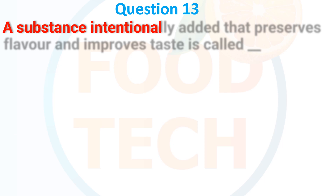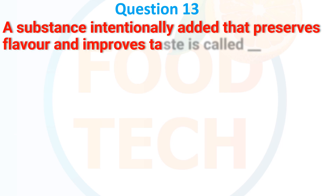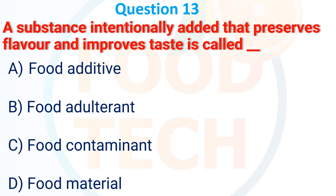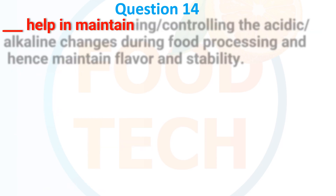Question 13. The substance intentionally added that preserves flavor and improves taste is called: A. Food additive. B. Food adulterant. C. Food contaminant. D. Food material. The correct answer is A: food additive.